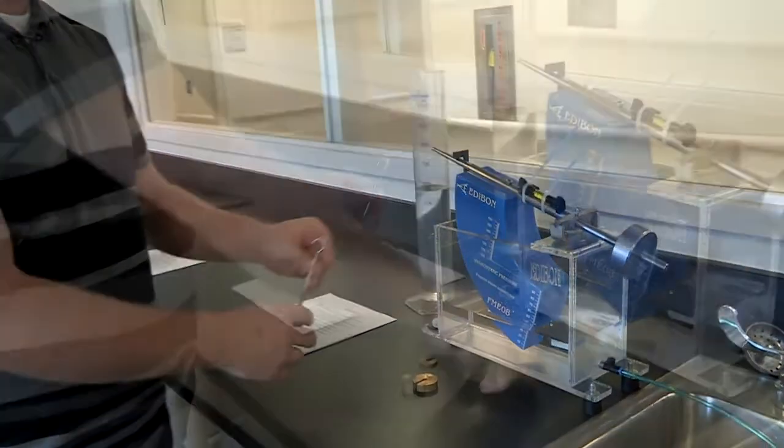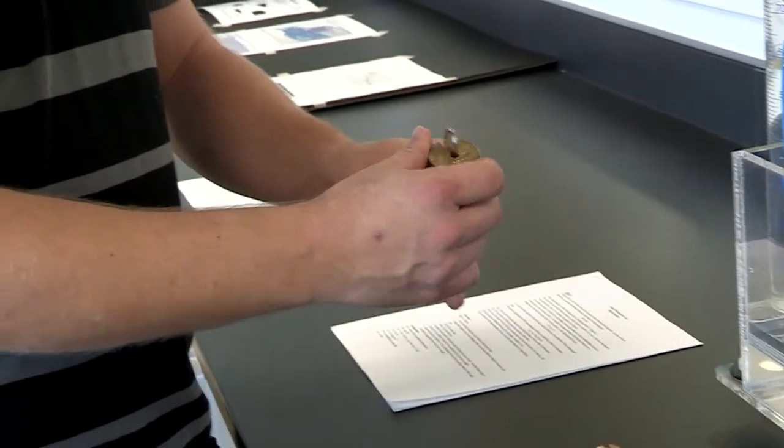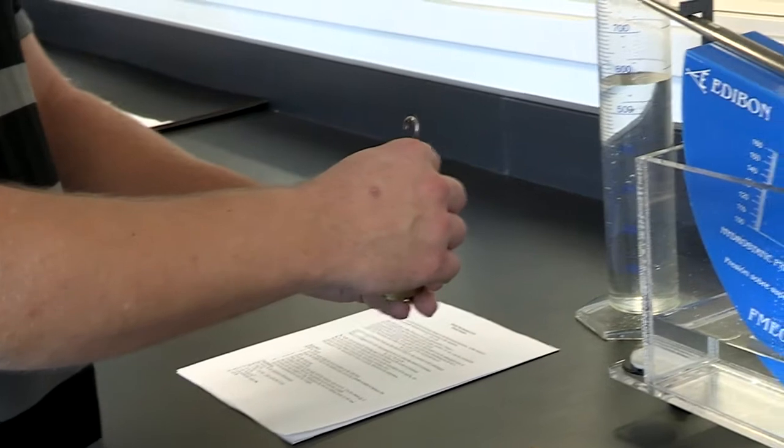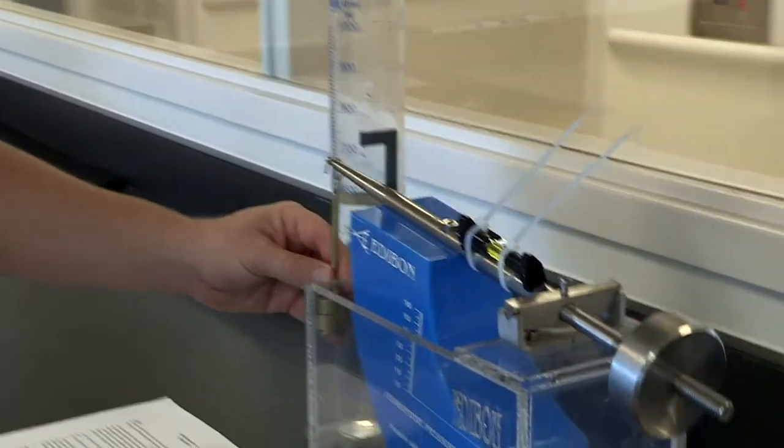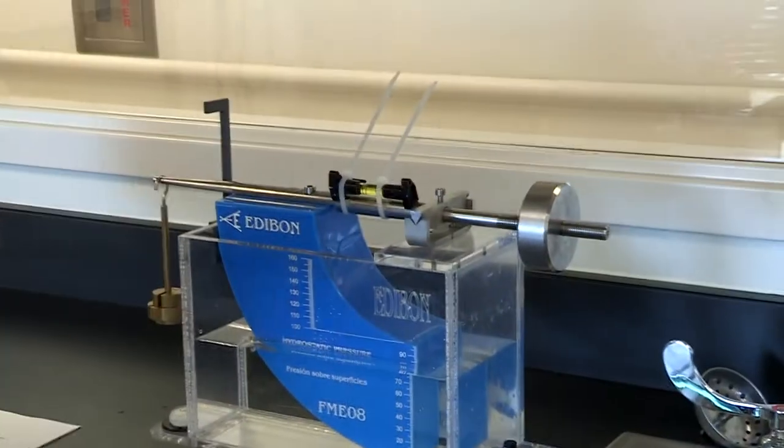The next thing that you'll do is remove the weights yet again. This time we'll be adding 150, so we have 100 grams right here, load it, add another 50 onto it. Once you have it locked in place, we'll set the weight back down.